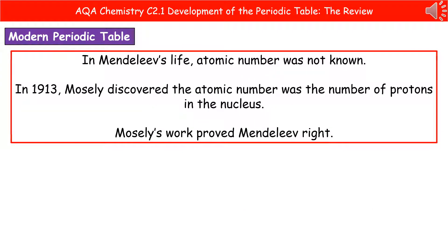The reason all the scientists had used atomic weight to order the elements was because at that time, atomic number just wasn't known. In 1913, that changed because Moseley discovered that the atomic number was the number of protons in the nucleus. Moseley's work then proved what Mendeleev had done was exactly right — those elements he'd flipped because their properties seemed to fit better the other way around, when we look at their atomic number, were exactly where they should be.